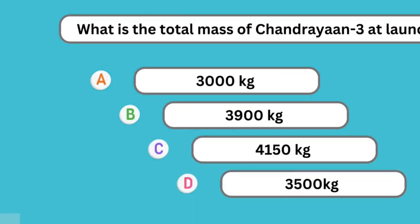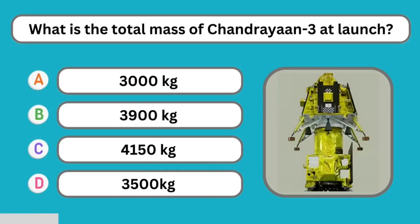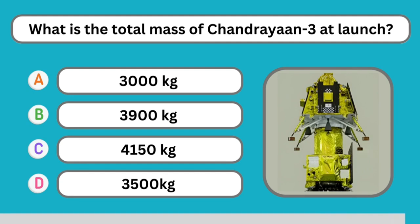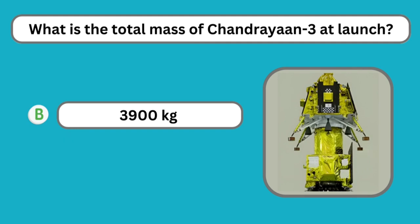Question number eighteen: What is the total mass of Chandrayaan 3 at launch? The correct answer is 3900 kg.